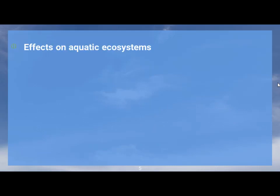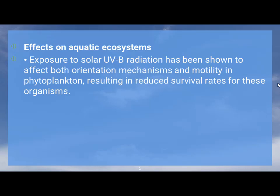Regarding effects on aquatic ecosystems, exposure to solar UVB radiation has been shown to affect both motility and photosynthesis in aquatic organisms. It can also affect mortality in phytoplankton, resulting in reduced survival rates for these organisms.